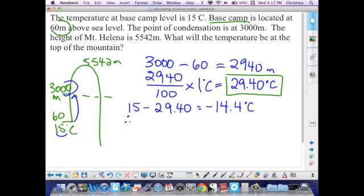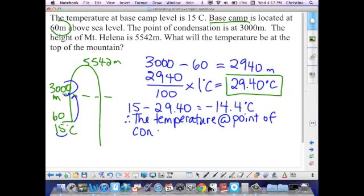Therefore, the temperature at the point of condensation is negative 14.4 degrees Celsius.